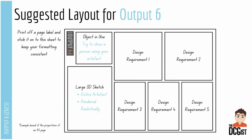Finally, how would I suggest you lay out output 6? Have a large 3D sketch of your entire artifact, rendered realistically, as the biggest sketch on your page — it doesn't have to be bottom left, it could be in the middle or elsewhere, but it needs to be there. Then have one sketch per design requirement, explaining each one. An object-in-use sketch is always a good addition — someone actually using it, perhaps with a hand shown, because having somebody using it is a very good explanation of how it works. Remember to print off your page label, stick it on, and that'll keep your formatting consistent throughout all the pages.